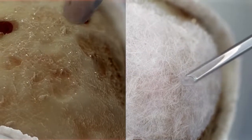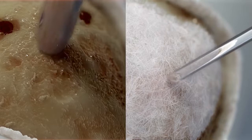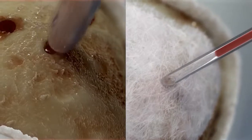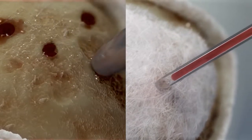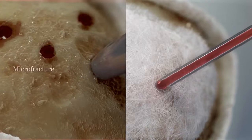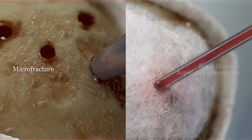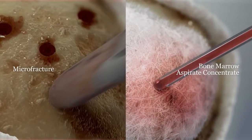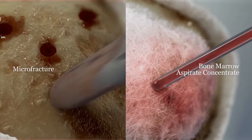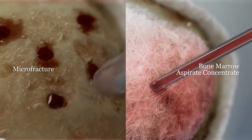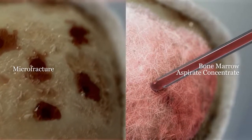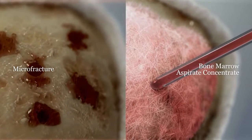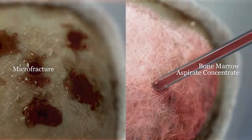Hyalophast is a highly versatile scaffold since it can act as a support for mesenchymal stem cells after their mobilization due to microfracture or from bone marrow aspirate concentrate. Hyalophast supports the entrapment and differentiation of mesenchymal stem cells and can be implanted in both open and arthroscopic surgery.